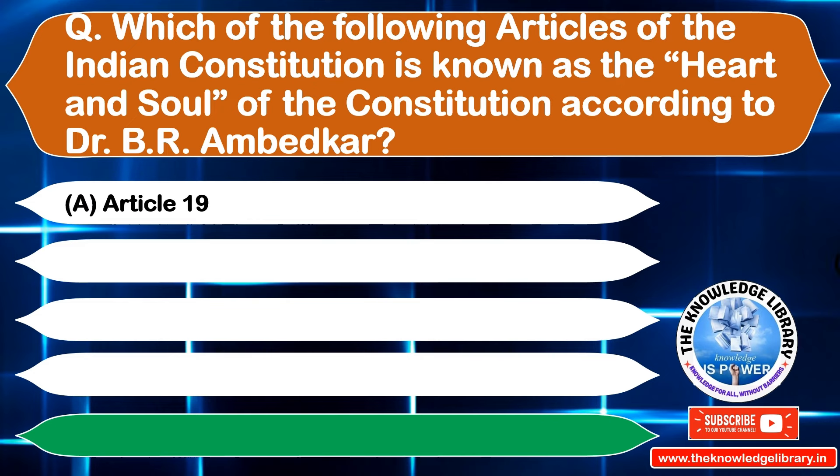The next question is: which article guarantees protection of the interest of the backward classes? Option A: Article 15(4), Option B: Article 16(4), Option C: Article 17, Option D: Both A and B. The correct answer is Option D: Both A and B.